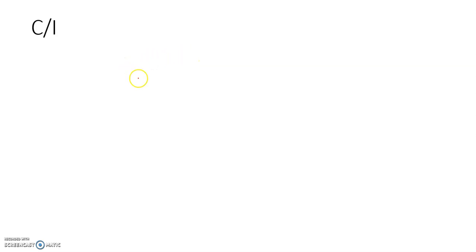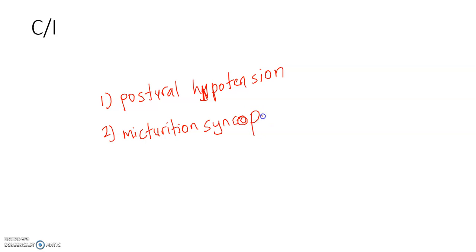Contraindications: Alpha blockers should be avoided in patients with a history of postural hypotension. If patients have a drop in their blood pressure when changing posture, we have to try to avoid giving them these drugs. Also avoid in patients with micturition syncope, because some patients tend to black out or faint when they urinate.